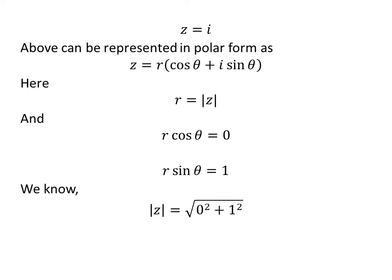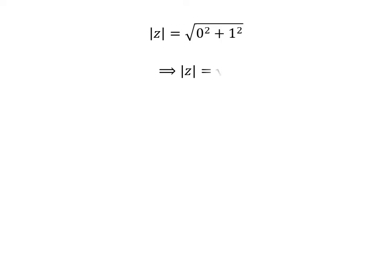As per the definition, the modulus of z equals √(0² + 1²). So, |z| equals √1, which implies |z| equals 1, which equals r.